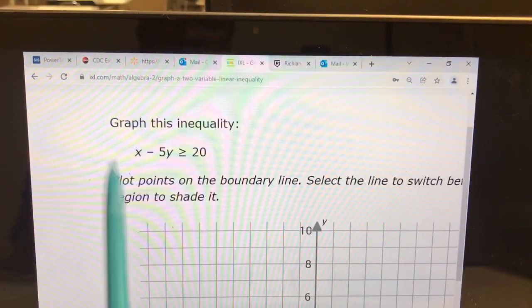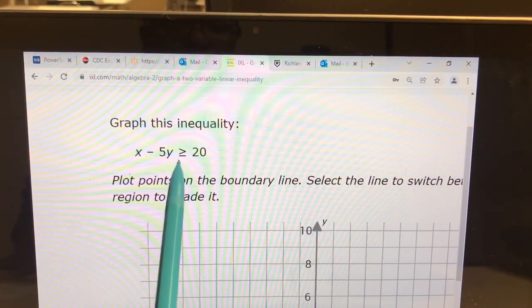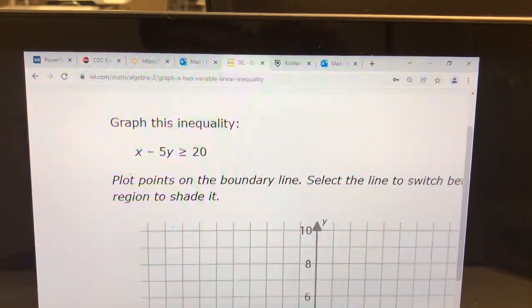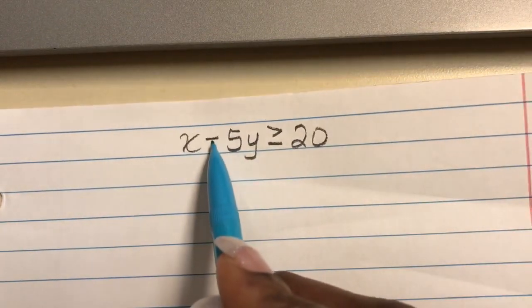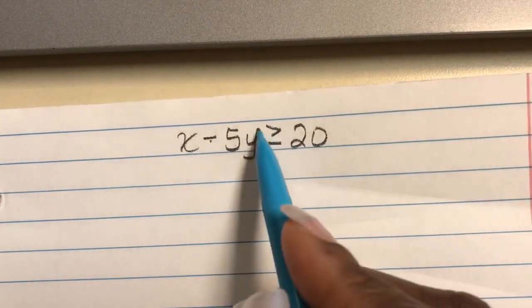Our next example: x minus 5y greater than or equal to 20. So remember, in order to solve this inequality, the first step is to circle the sign, the number, and the y.